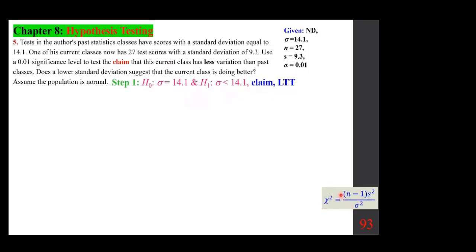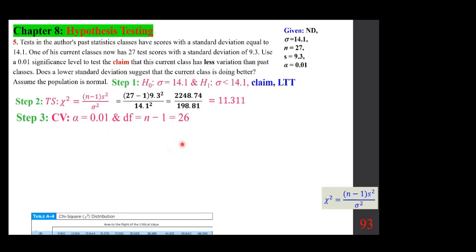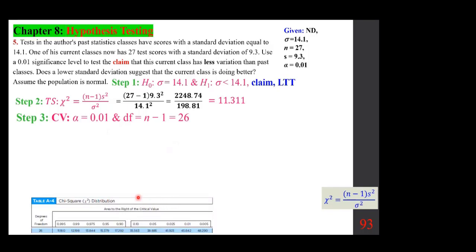Using the chi-squared test statistic formula and plugging in the values, we get 11.311. For the critical value, we use the chi-squared distribution with degrees of freedom N − 1 = 26 and area to the right of 1 − alpha = 0.99, resulting in a critical value of 12.198.